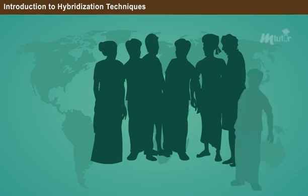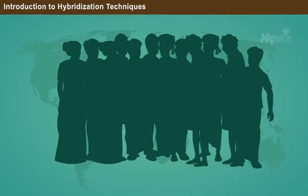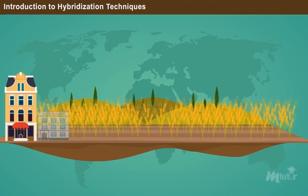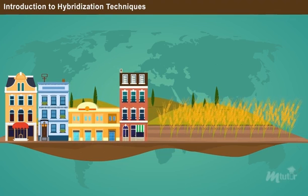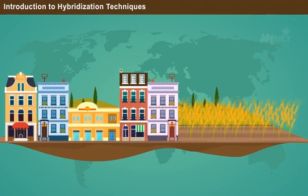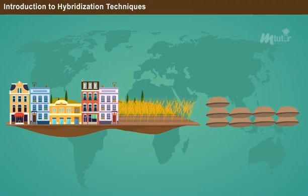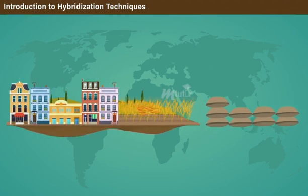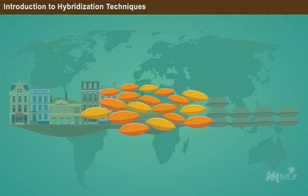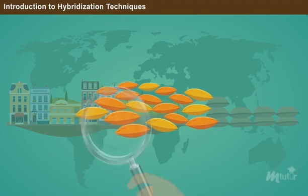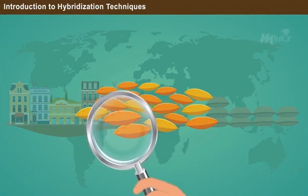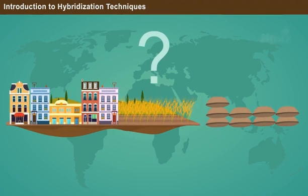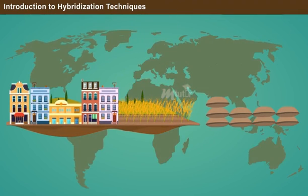Nearly 400 million people remain malnourished. Everybody is aware of the increasing global population. As a result, most agricultural lands are being exploited for dwelling and commercial purposes, thereby decreasing cultivation prospects and affecting food production. Production of good quality seeds is yet another big challenge in agriculture that can impact overall yield. What could be done to control the chronic food shortage that troubles the entire world?